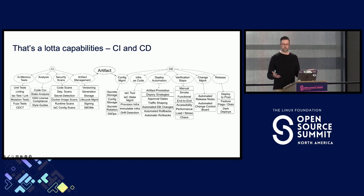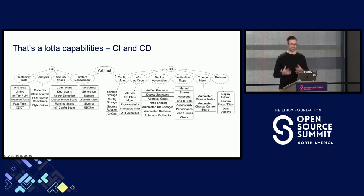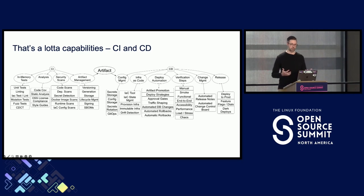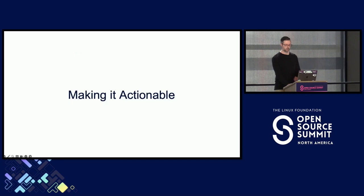We heard earlier in the talk from Adobe about cognitive load — this is a lot of cognitive load. And to make it worse, I'm going to show you both CI and CD at the same time. Don't try to squint and read all of these; I just want you to see them laid out next to each other, and also the reminder that the artifact is the handoff between these two. At this point you may be feeling like you don't even want to do CI/CD anymore — it's too much. So we'll talk about how having this map makes that easier to deal with.